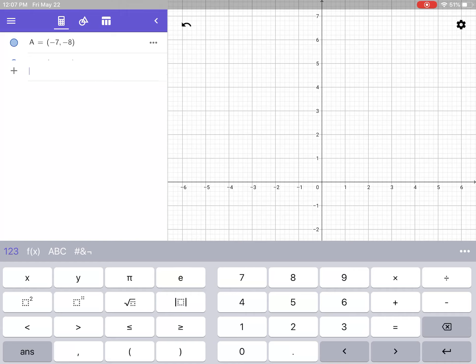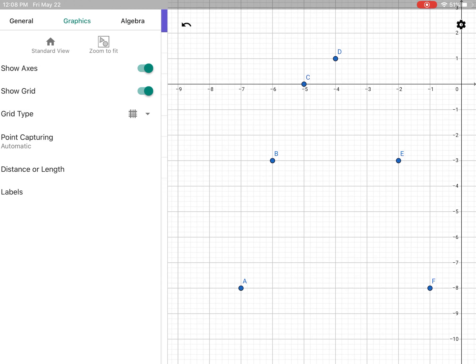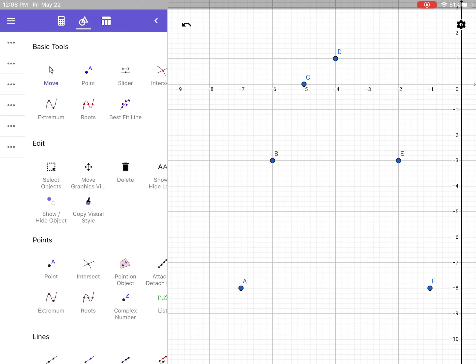I have negative 7, negative 8. Negative 6, negative 3. Negative 5, 0. Negative 4, 1. Negative 2, negative 3. Negative 1, negative 8.